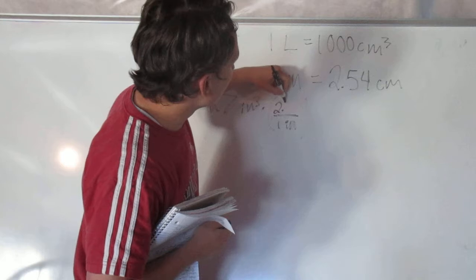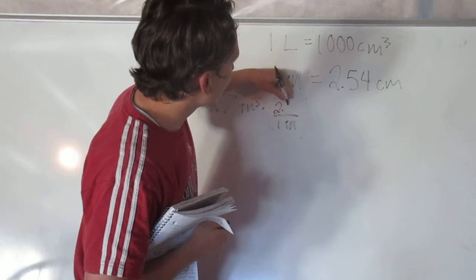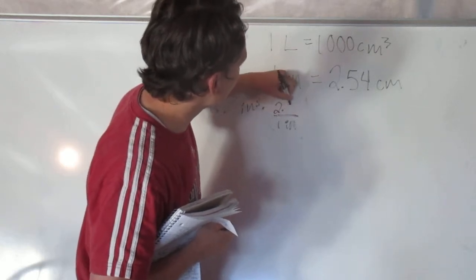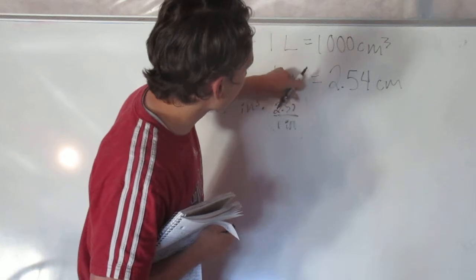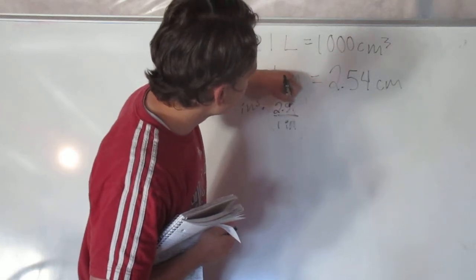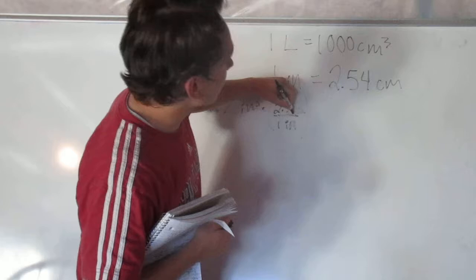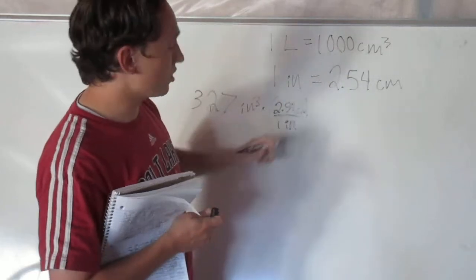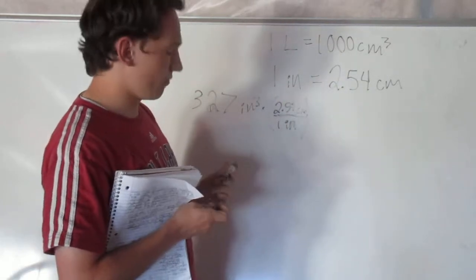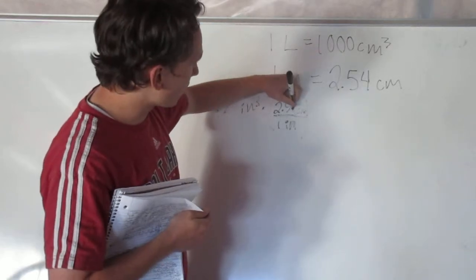So 1 inch on the bottom there, and we put 2.54 centimeters. Now these two things are equal here: 2.54 centimeters and 1 inch.